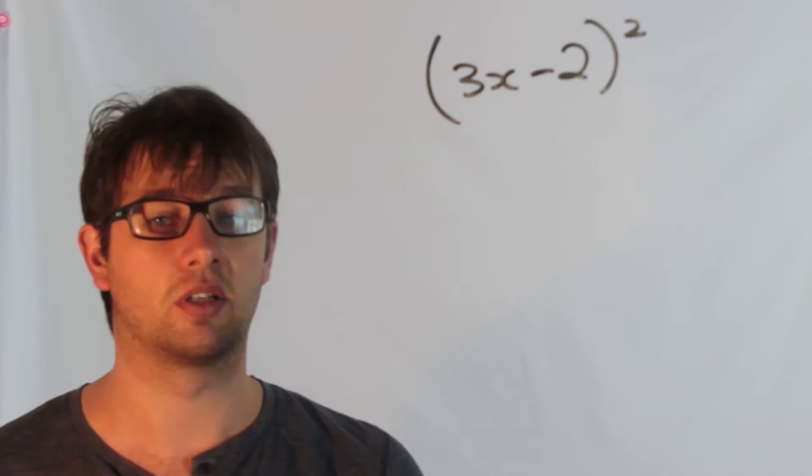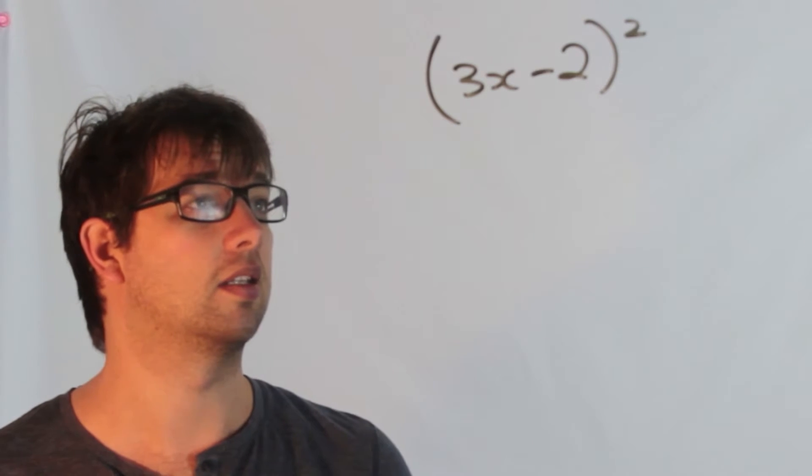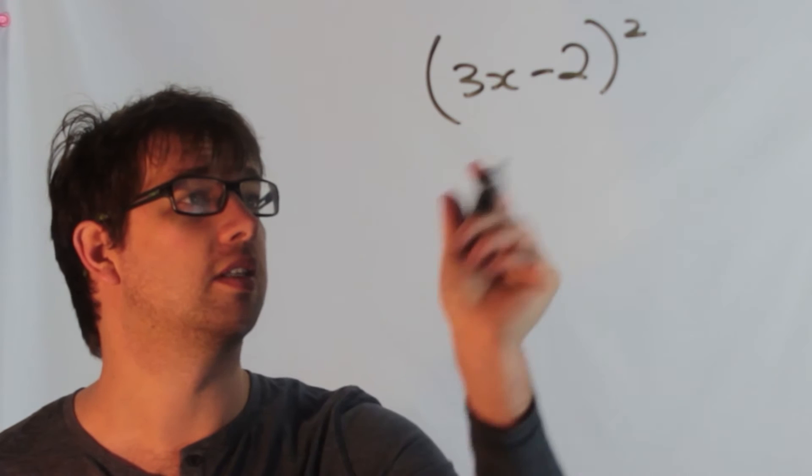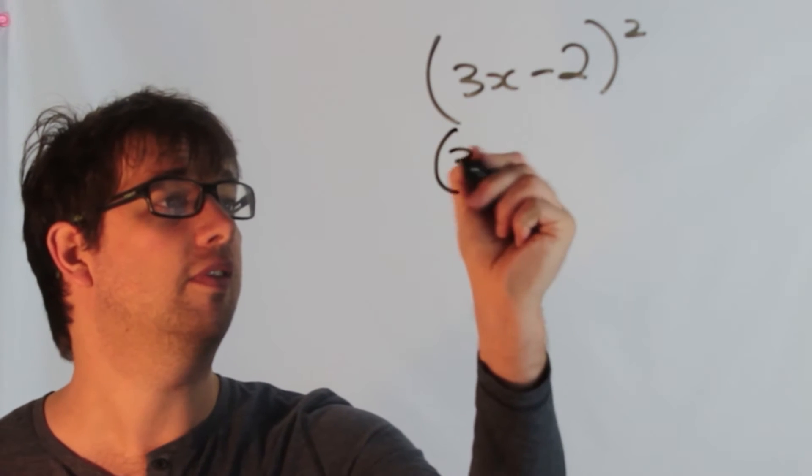Now this is called a perfect square and we're going to expand the brackets here. So a perfect square is when we've got a factor times itself.